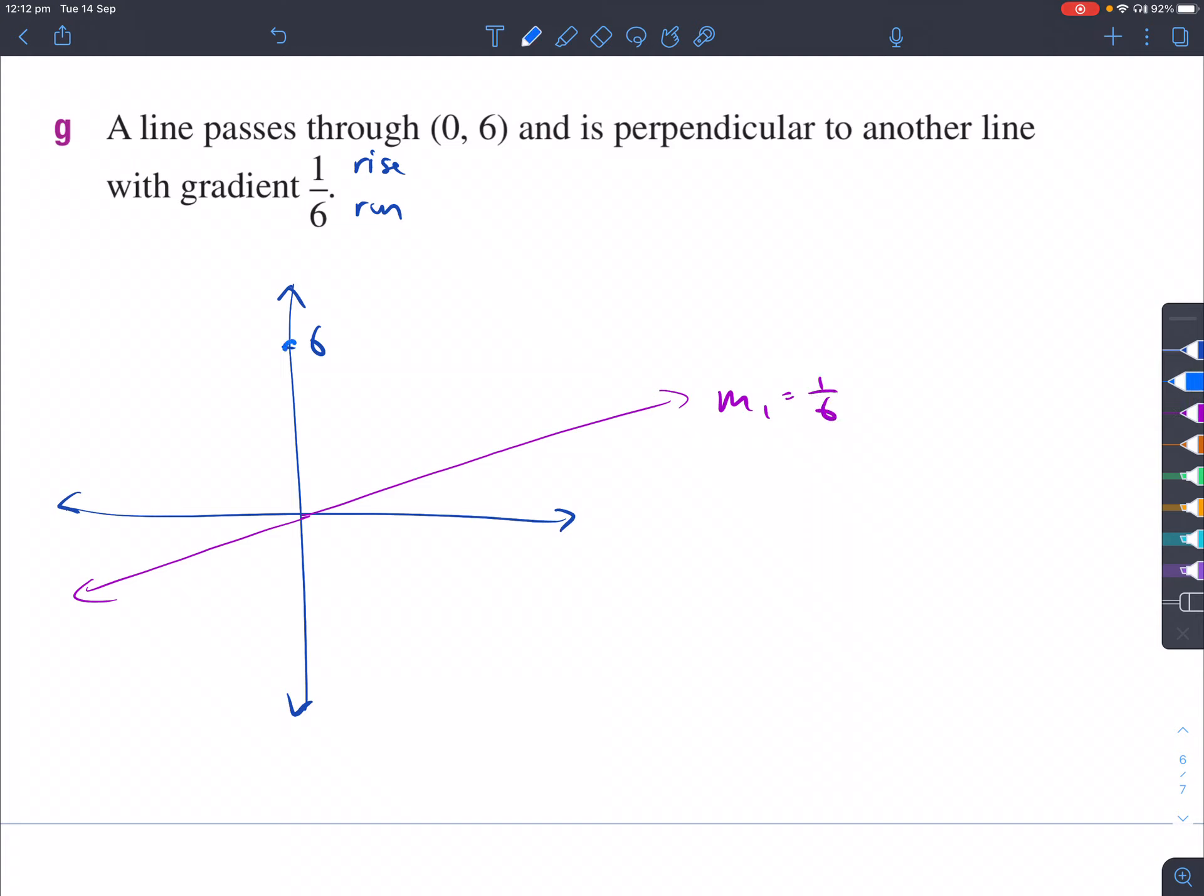But there's another line that passes through this point here, which is (0,6), and it's perpendicular to it. So that means it looks like this. So I'm trying to find out the equation from the blue line.